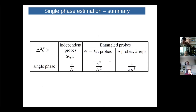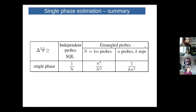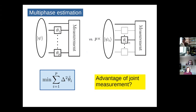To summarize single-phase estimation: if we use probes independently, we have just the shot noise limit. When we use entangled probes with arbitrarily many repetitions, we get 1 over k times n-squared. When the total number of photons is restricted, we get the pi-squared correction to the Heisenberg limit.